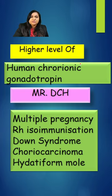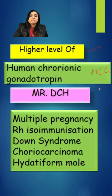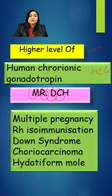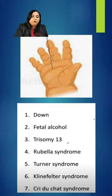The other conditions which can give rise to a higher level of hCG can be remembered with the mnemonic 'MR DCH': M stands for multiple pregnancy, R stands for Rh isoimmunization, D stands for Down syndrome, C stands for choriocarcinoma, and H stands for hydatidiform mole.